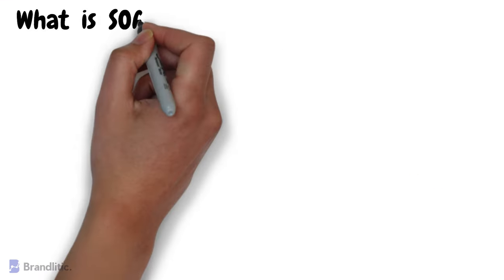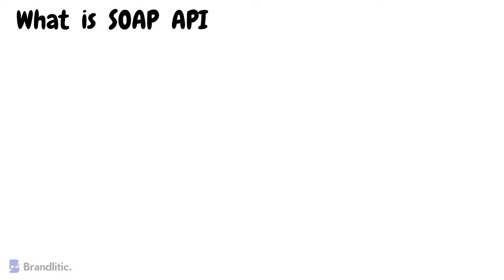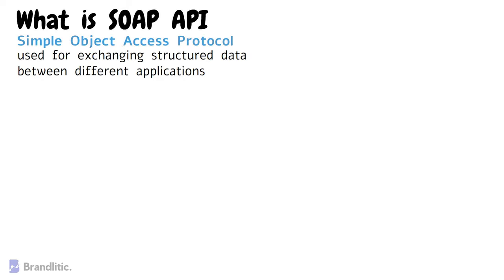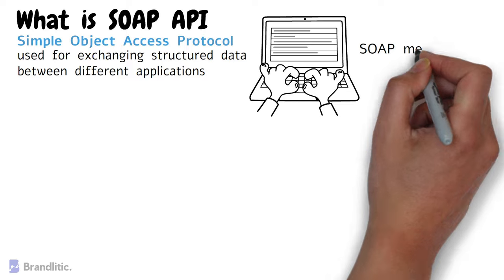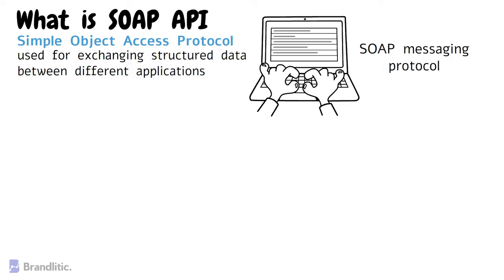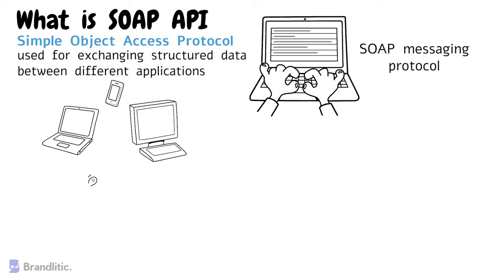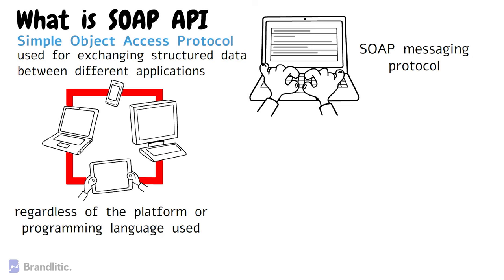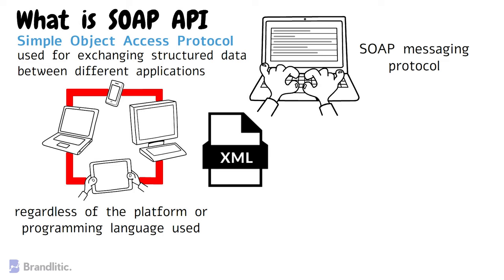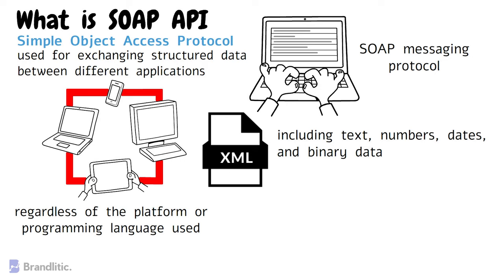Next up, what is SOAP API? SOAP stands for Simple Object Access Protocol, which is a messaging protocol used for exchanging structured data between different applications. SOAP API is a web-based application programming interface that follows the SOAP messaging protocol. The primary purpose of SOAP is to provide a standardized way to exchange data between applications regardless of the platform or programming language used. SOAP API uses XML as the format for sending and receiving data, and it provides a wide range of data types including text, numbers, dates, and binary data. SOAP also supports multiple transport protocols including HTTP, SMTP, and FTP.